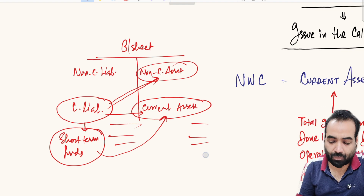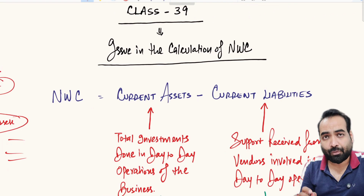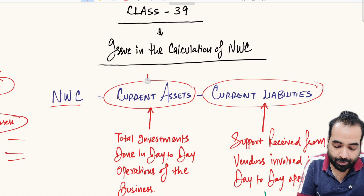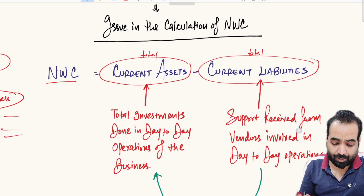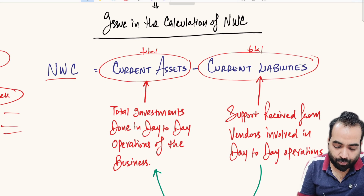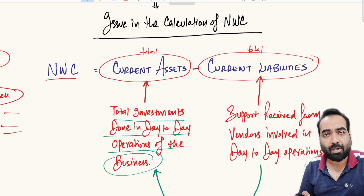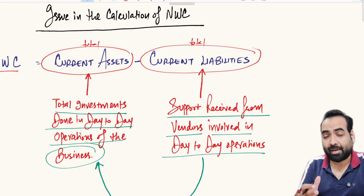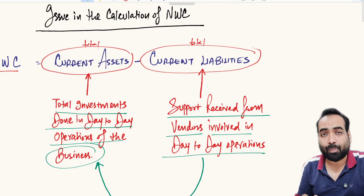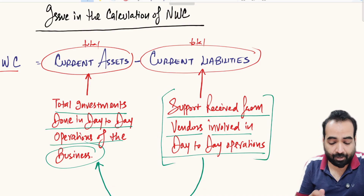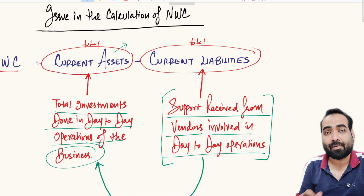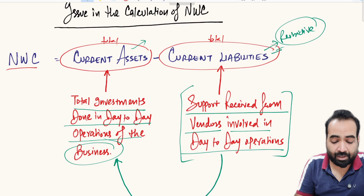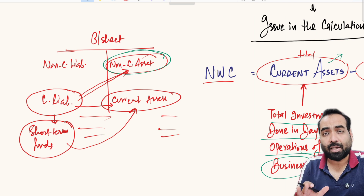This is Class 39 on the issue in the calculation of NWC. NWC means current assets minus current liabilities. Current assets represent total investments done in day-to-day operations of the business. Current liabilities are the support received from vendors involved in day-to-day operations — vendors who help us and whom we can pay later. Their funds are restrictive in nature; we cannot use their funds to create non-current assets.